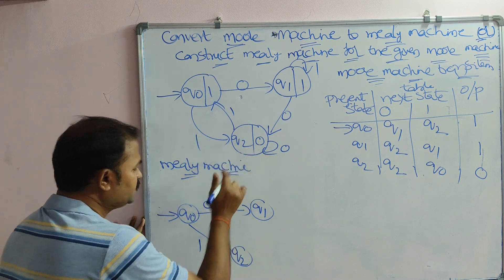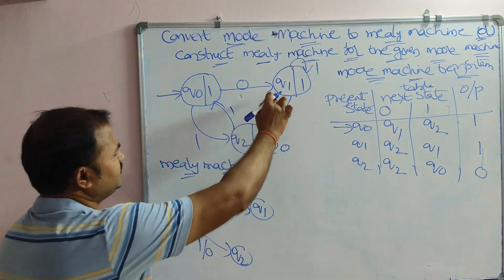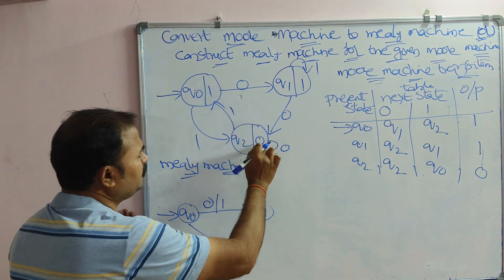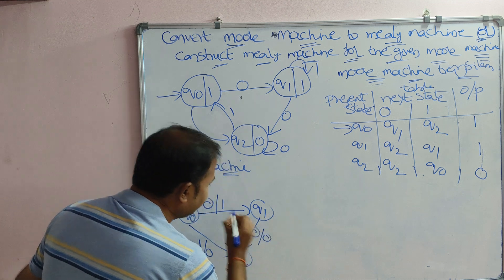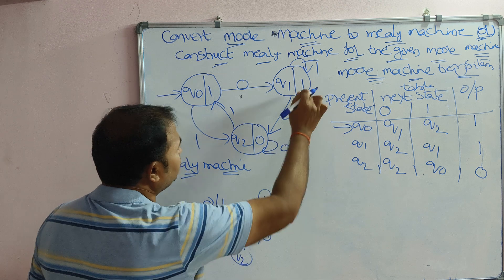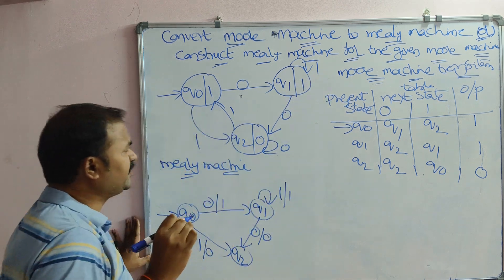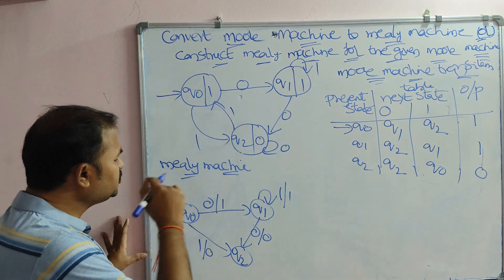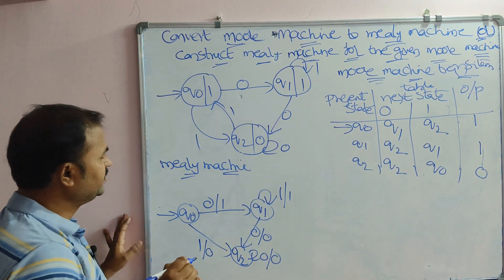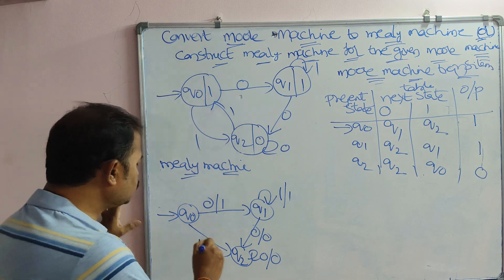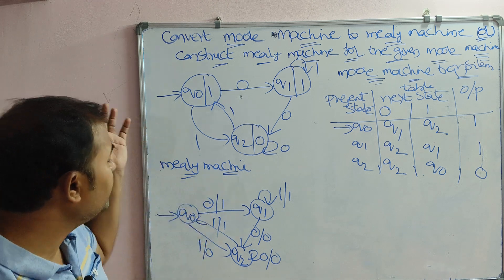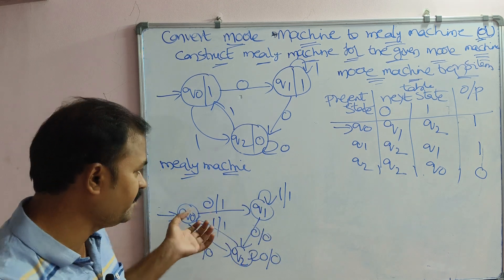Continuing: Q1 on 0 goes to Q2, output is 0. Q1 on 1 goes to Q1, output is 1. Q2 on 0 goes to Q2 (self-loop), output is 0. Q2 on 1 goes to Q0, and the output of Q0 is 1. This completes the Mealy machine transition diagram.